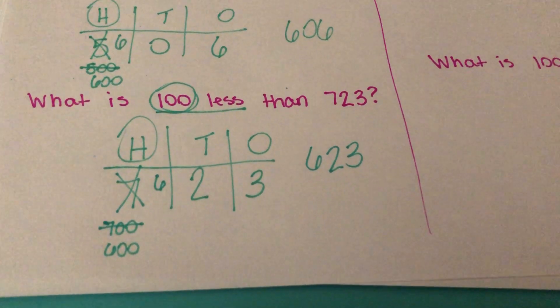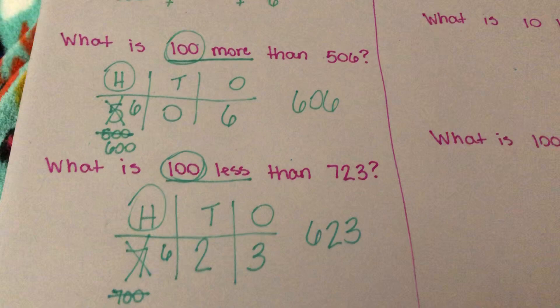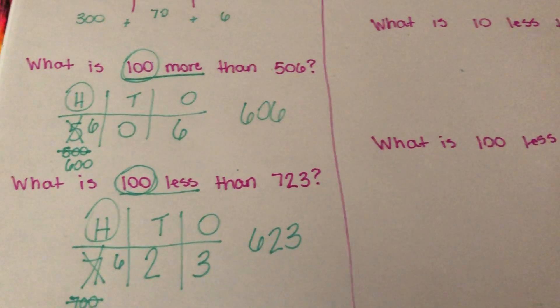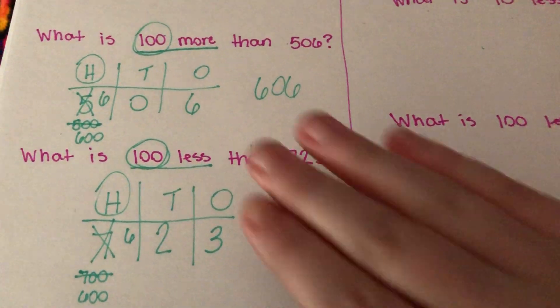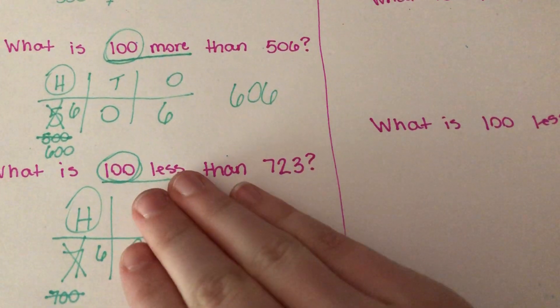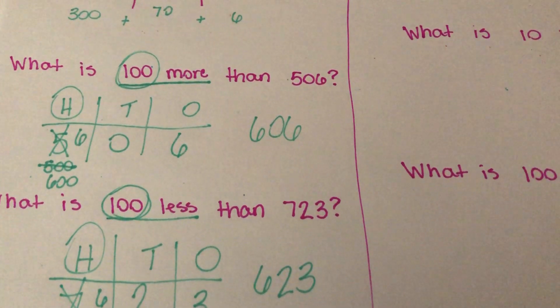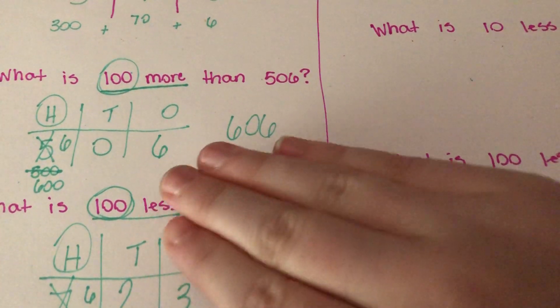This is very tricky for students. It seems like it's so easy and such an easy concept, but they really do struggle. So I would do several examples. I would switch them up and not do all 100 more for 20 minutes and then all 100 less.